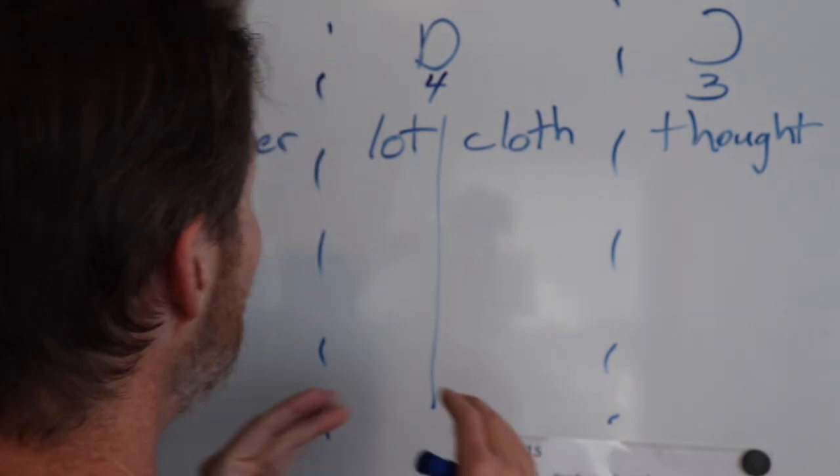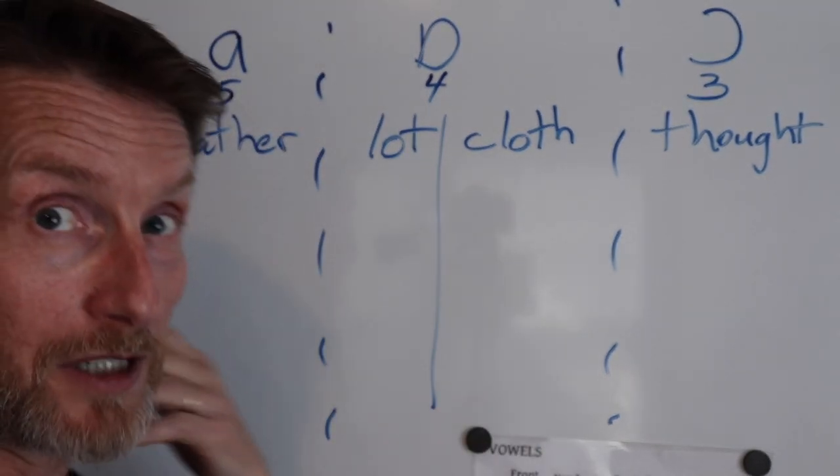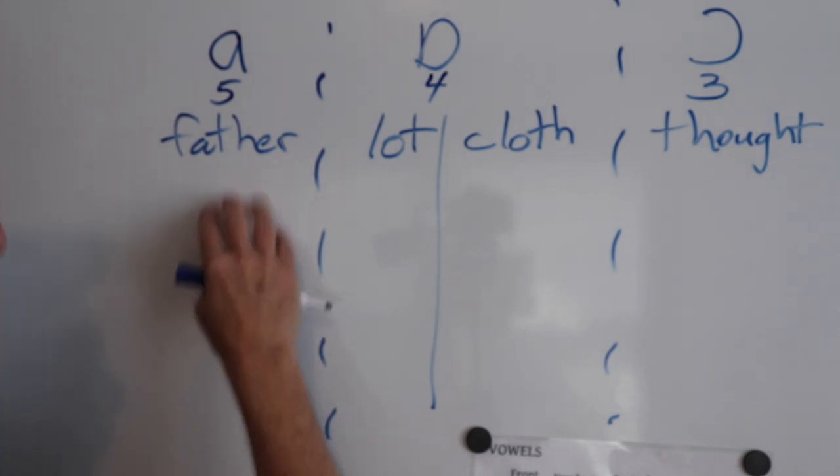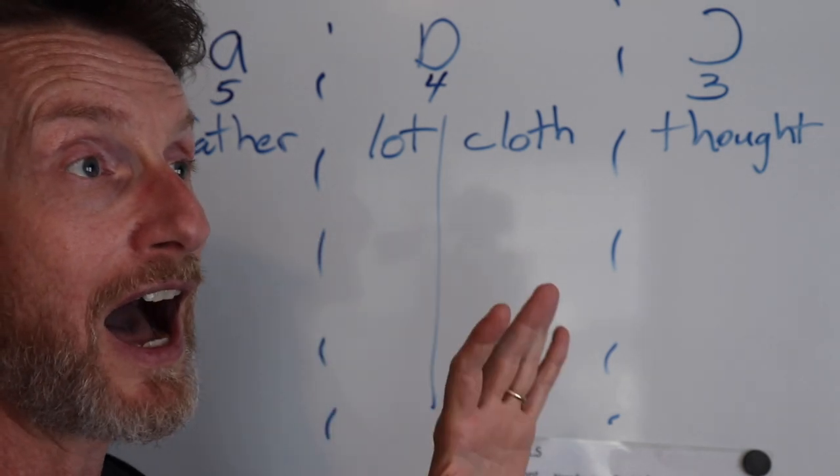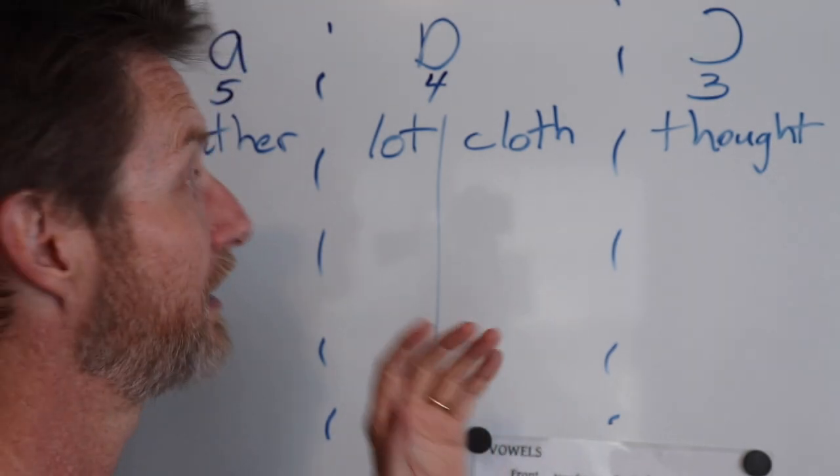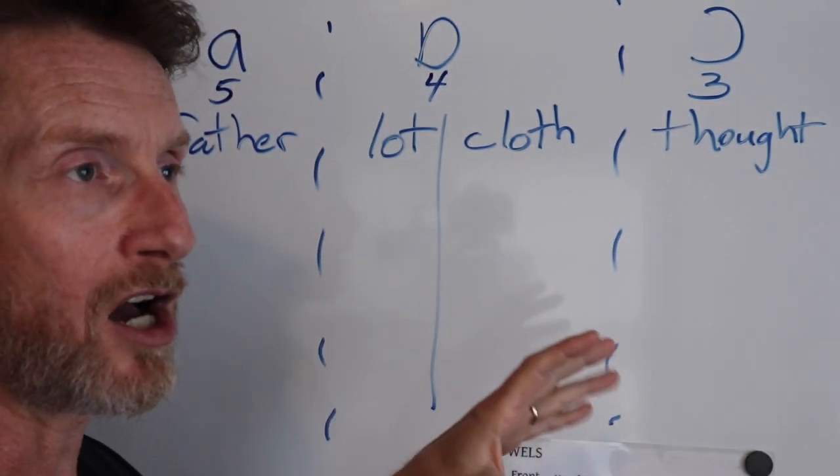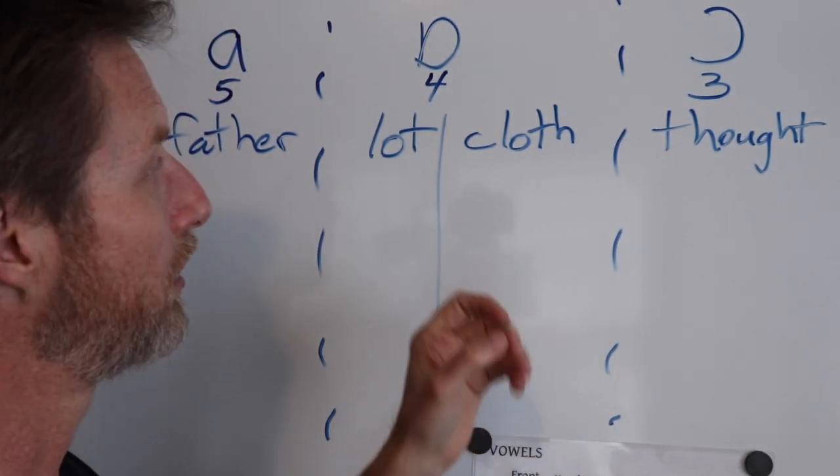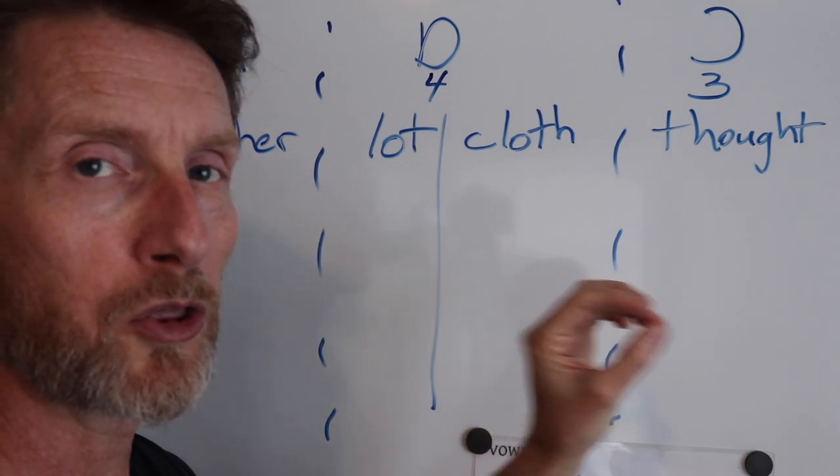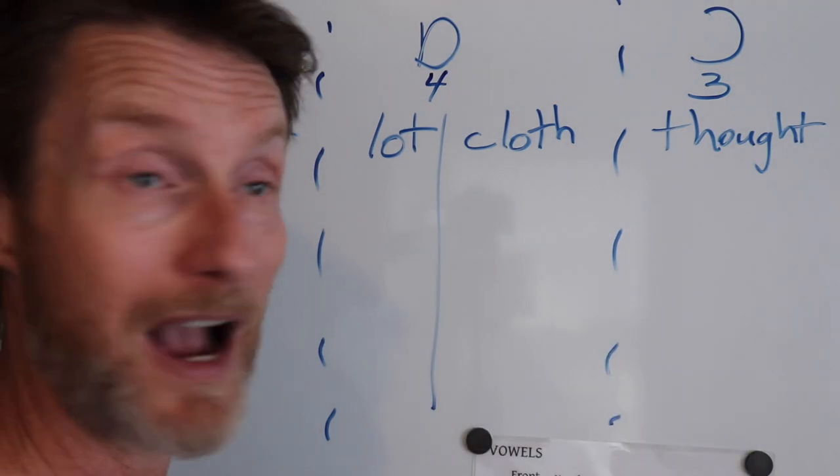So this 3 almost feels more like a 2.5 maybe. It's even more rounded. This 4 is rounded at the back. This 5 is more of an open vowel. Ah, father. Ah, lot, cloth. Oh, thought. That very rounded sound.